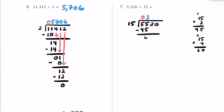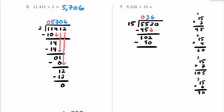Now that we have a remainder of 10, let's bring this 2 down and repeat the process. Now we have 102. How many times does 15 fit into 102? 15 times 7 is 105 — that's a little too much. So let's do 15 times 6. 6 times 5 is 30, carry the 3; 6 times 1 is 6 plus 3 is 9, so that's 90. I'll put a 6 up here. 6 times 15 is 90. 102 minus 90: 2 minus 0 is 2, and 10 minus 9 is 1, so we're off by 12.